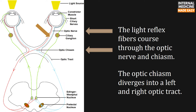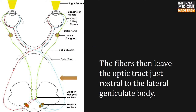The light reflex fibers go through the optic nerve and chiasm. The optic chiasm diverges into a left and right optic tract. The fibers then leave the optic tract just rostral to the lateral geniculate body.